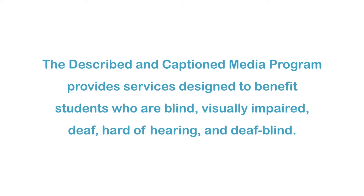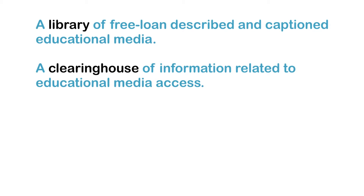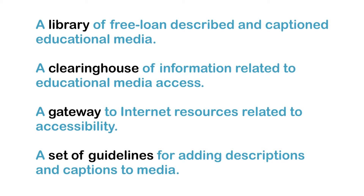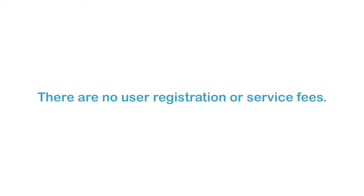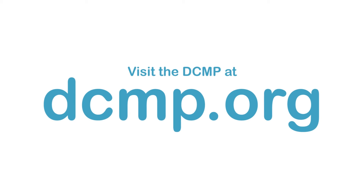The Described in Caption Media Program provides services designed to benefit students who are blind, visually impaired, deaf, hard of hearing, and deaf-blind. These services include a library of free loan described and captioned educational media, a clearinghouse of information related to educational media access, a gateway to internet resources related to accessibility, and a set of guidelines for adding descriptions and captions to media. There are no user registration or service fees. Visit the DCMP at DCMP.org.